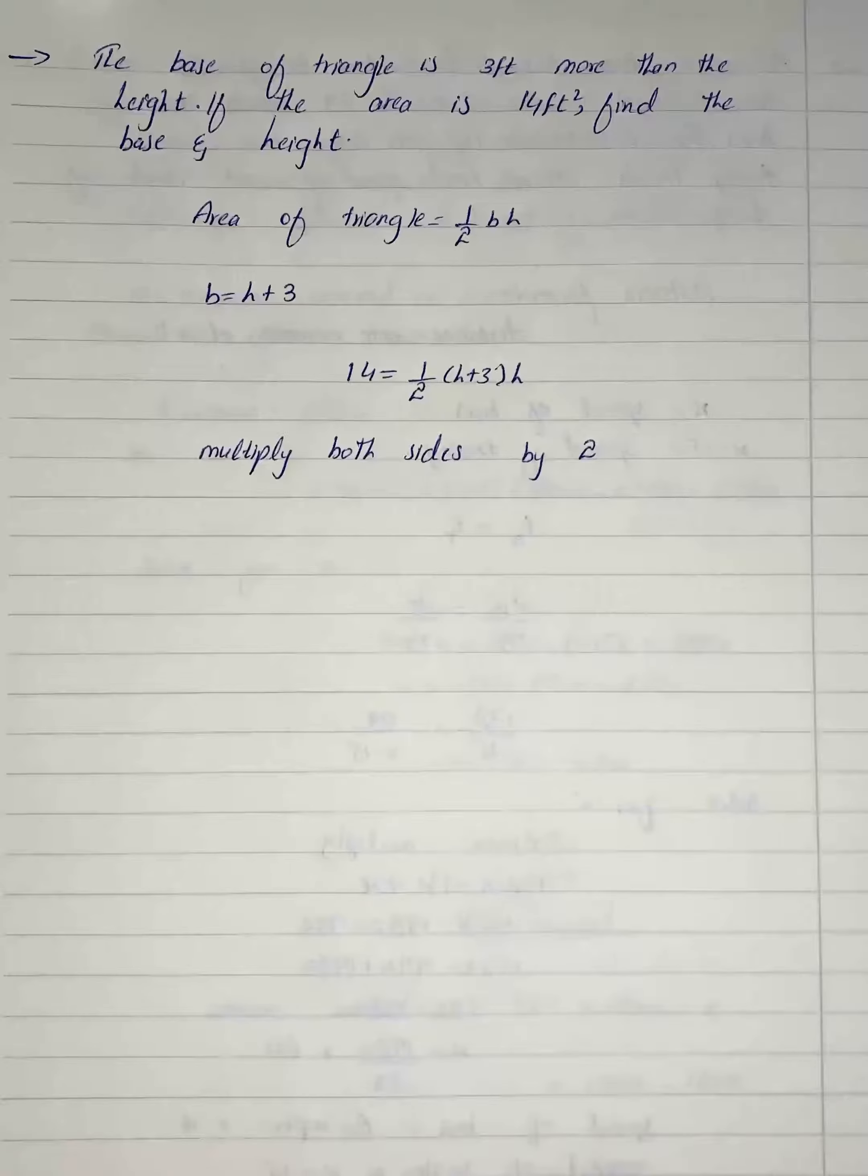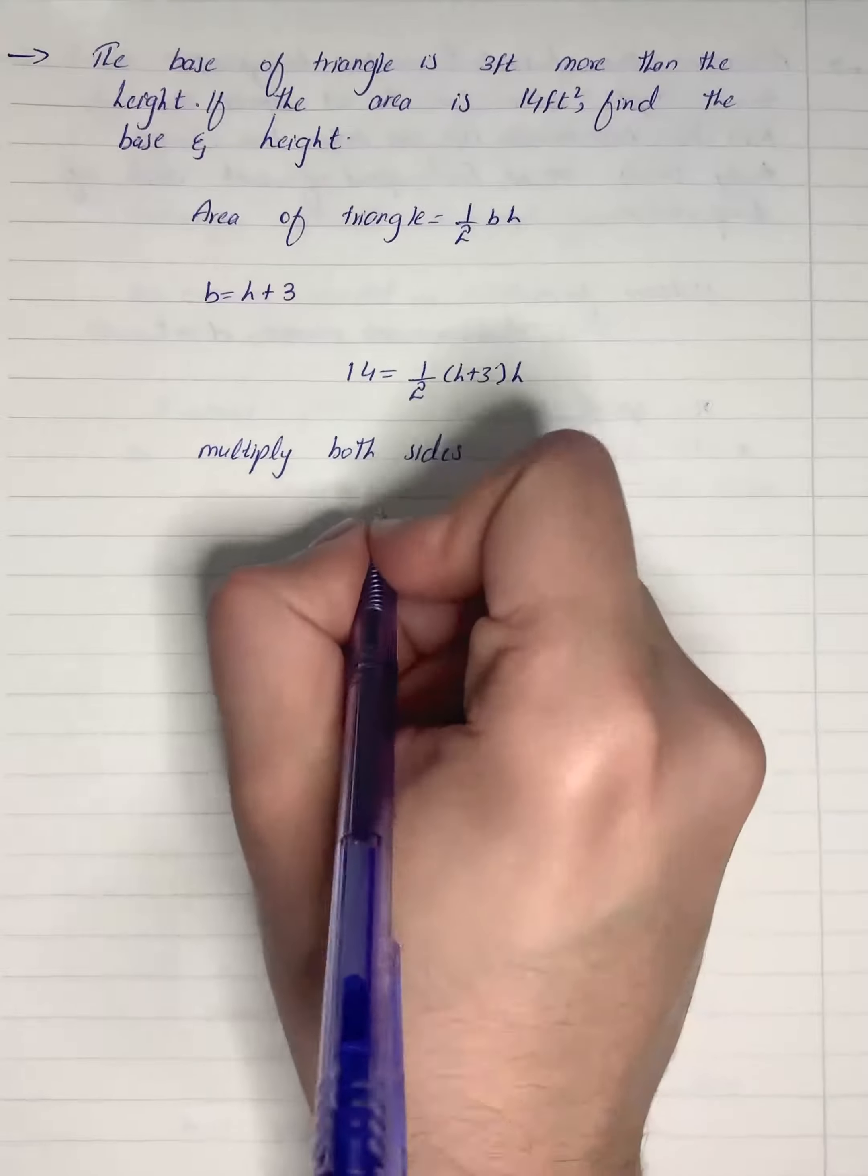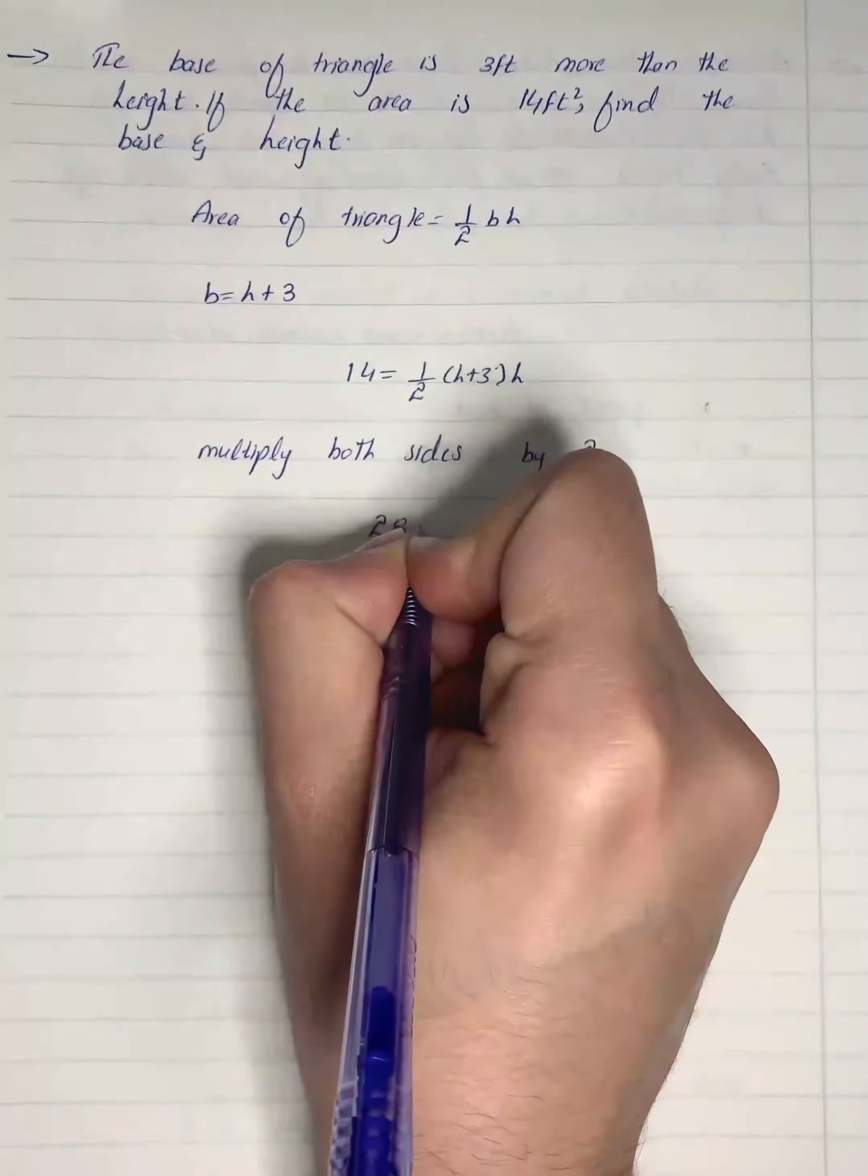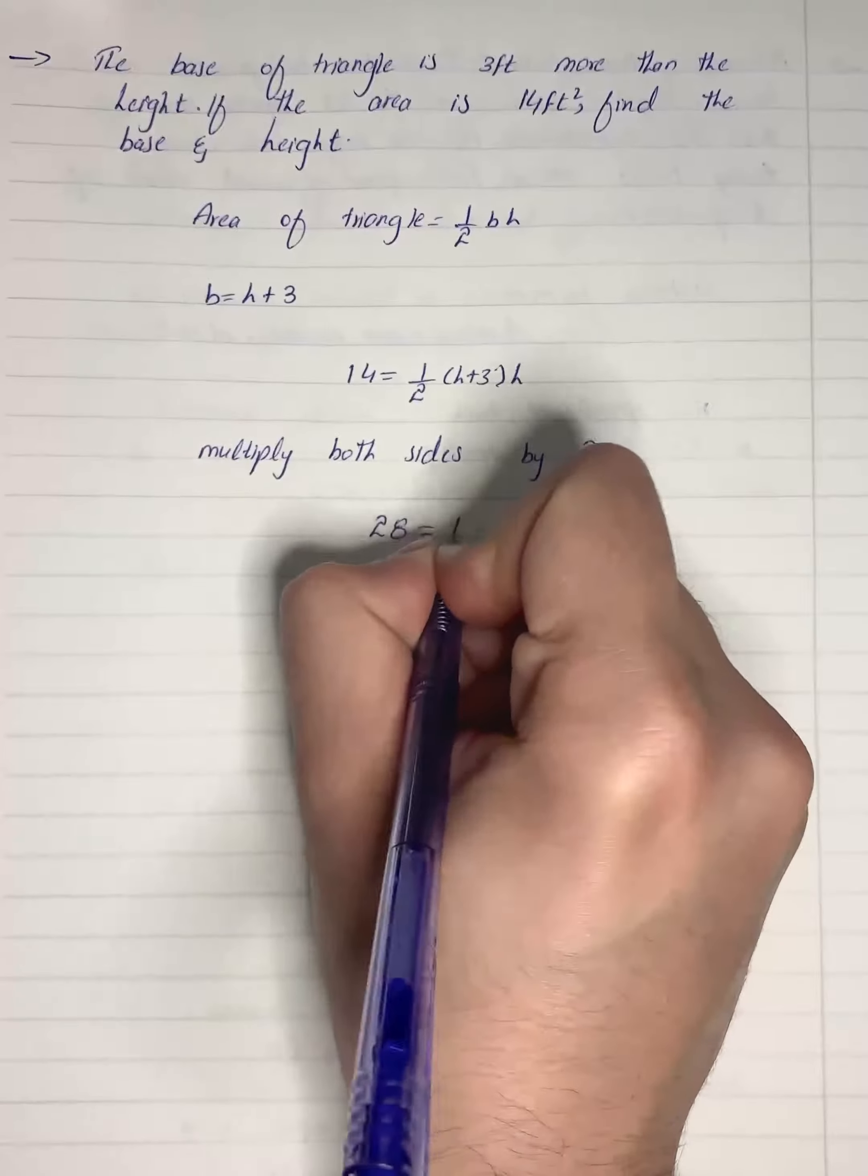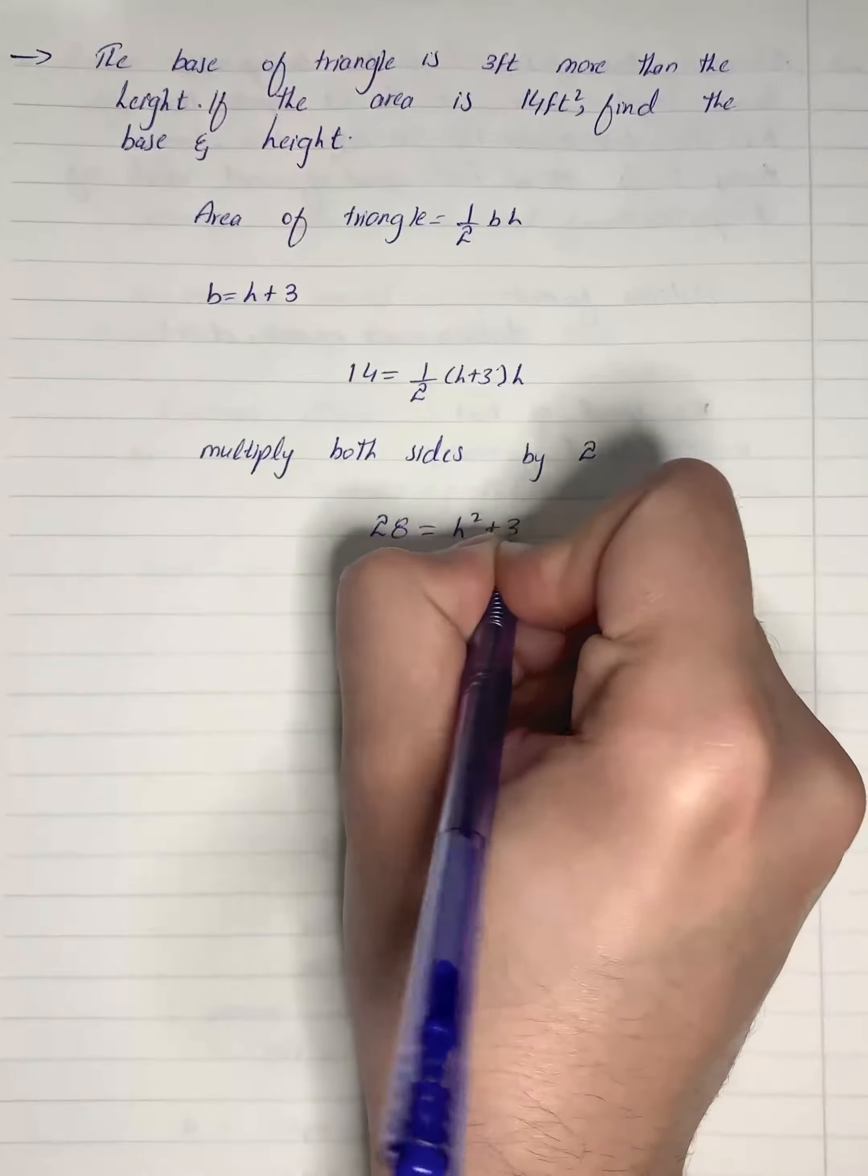We will multiply both sides by 2, so it will give us 28 equals to h squared plus 3h.